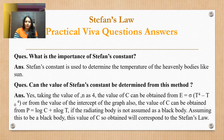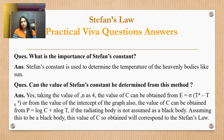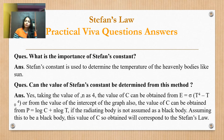We take the log: log P equals log C plus N log T. If the radiating body is not assumed to be a perfectly black body, but we assume it to be one, the constant C corresponds to Stefan's law. We plot the graph, and from the intercept of the graph, the value of C — which corresponds to sigma — can be obtained.